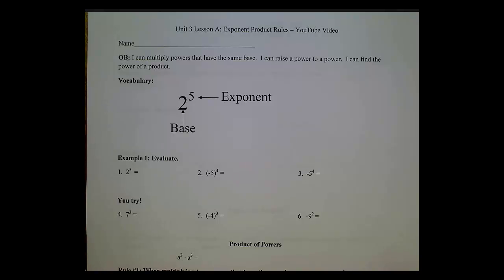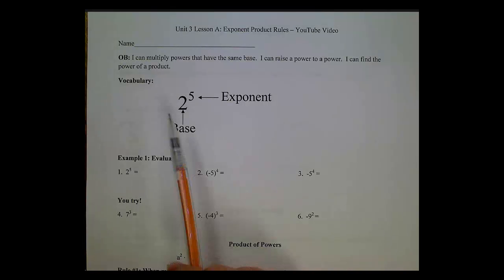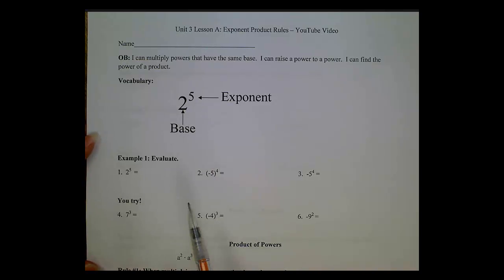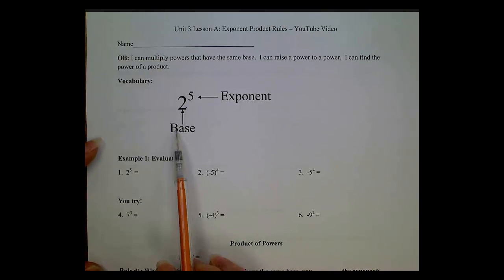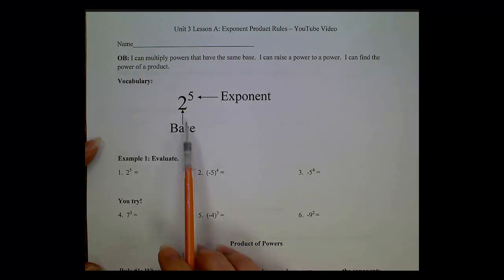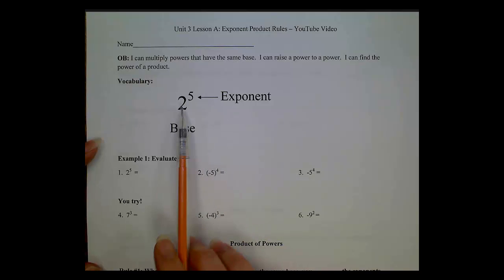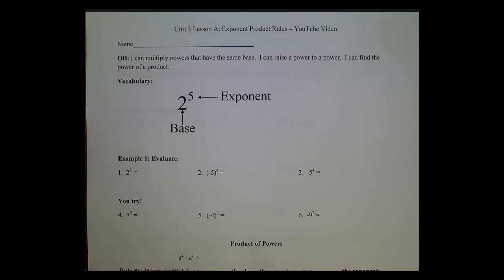Before we start getting into today's rules, we need to go over some vocabulary. Here we have 2 to the 5th power. The 2 is our base, and the 5 is our exponent, so the exponent is being applied to that base. In the problems today and in future lessons, it's going to be real important that you're paying attention to whether a number or a variable is a base or an exponent, because they'll make a big difference in what your answer will be.